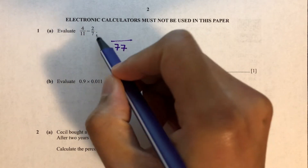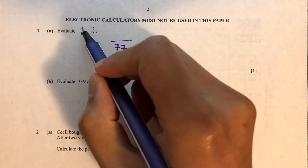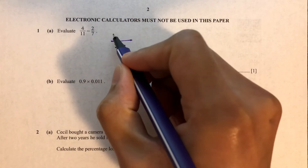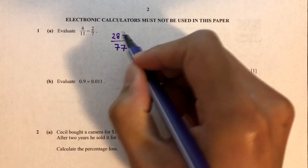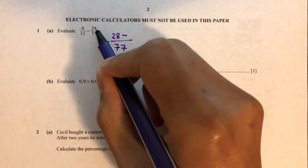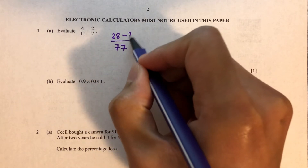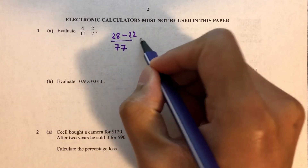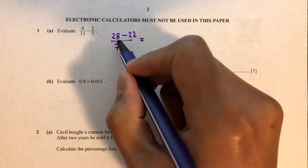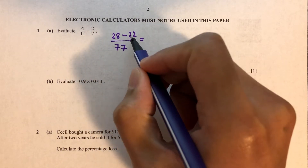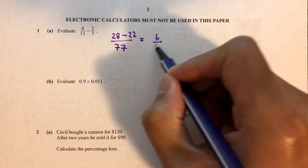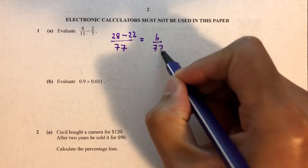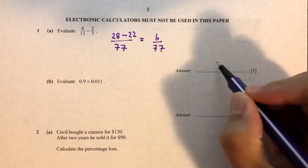And then we cross multiply. So 4 times 7 is 28, minus 11 times 2 which is 22. So 28 minus 22 is 6 over 77. And that is your answer.